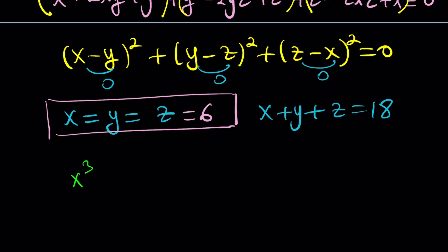then x cubed plus y cubed plus z cubed minus 3xyz is also going to be 0. Because this contains a factor of x plus y plus z. And again, we did a lot of problems with this identity, too.